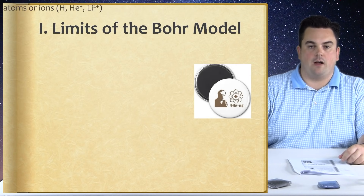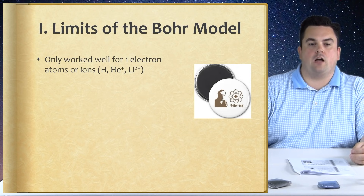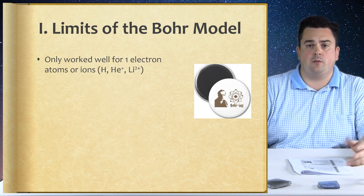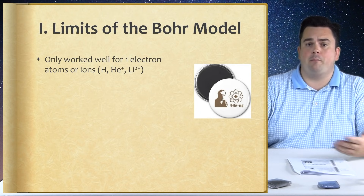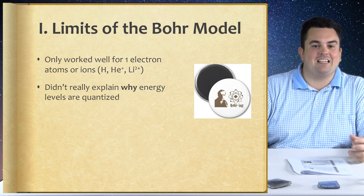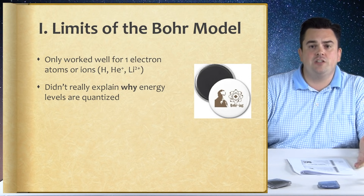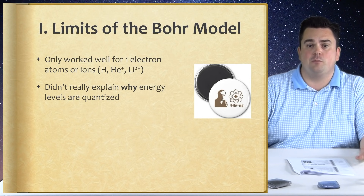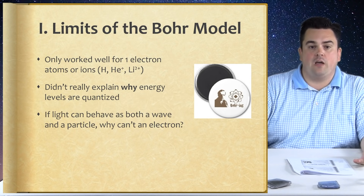Limits of the Bohr model: it only worked well for one-electron atoms or ions, like hydrogen, helium ions, or lithium ions. If you added a second electron, the math just fell apart. It didn't really explain why energy levels are quantized. All good scientific theories should be able to be explained in terms of math.